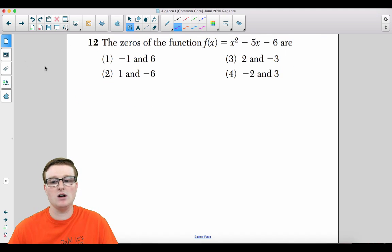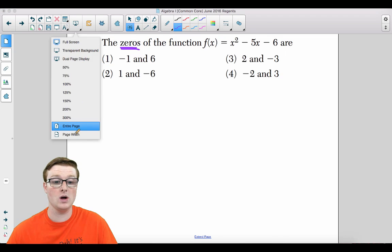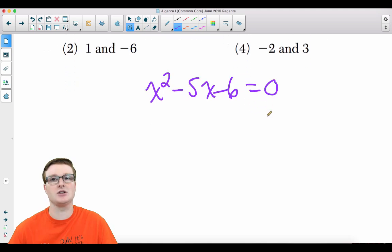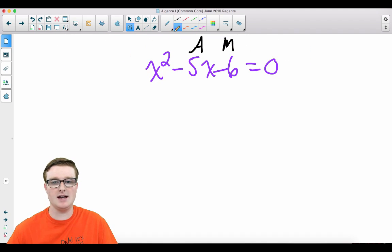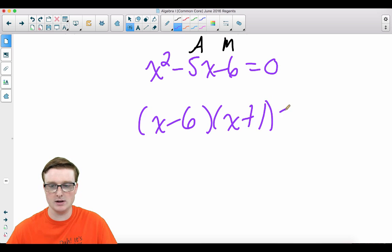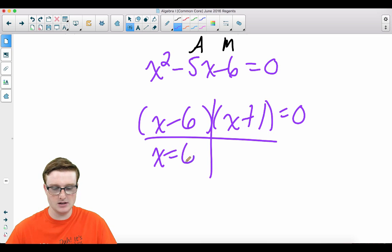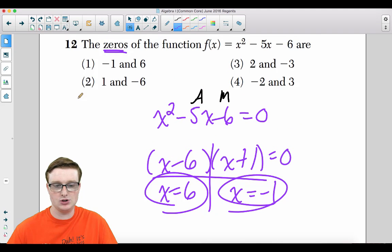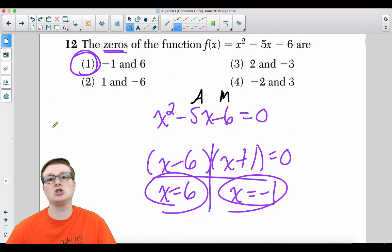Last but not least, number 12, the last question of this video. The zeros for the function f of x equals x squared minus 5x minus 6 are what? So your goal, take x squared minus 5x minus 6, set it equal to zero, and you're going to solve. What adds to negative 5 and multiplies to give you negative 6? So that is going to be x minus 6, x plus 1 equals 0. Then you t-bar it, x equals 6, x equals negative 1. And those, ladies and gentlemen, are the roots to this equation. Your answer is going to be choice 1.